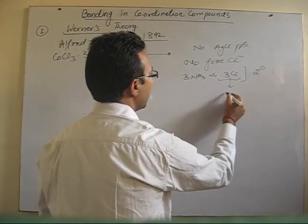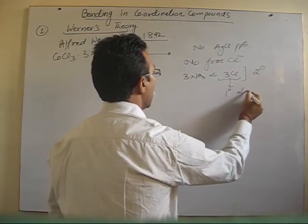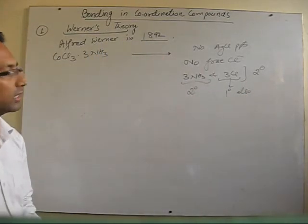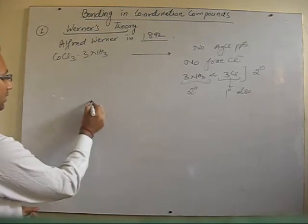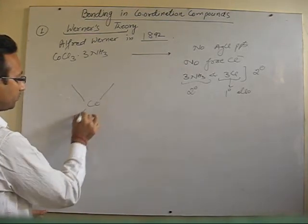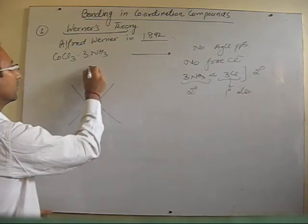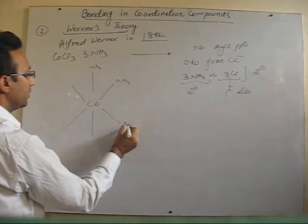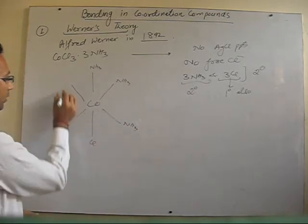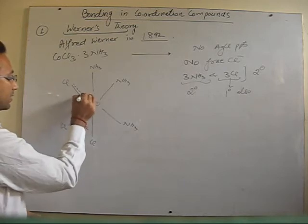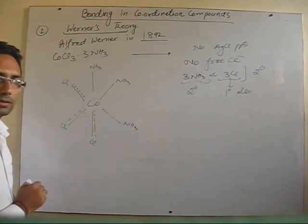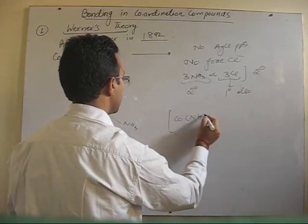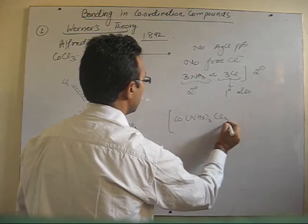These 3 Cl will satisfy primary valency also, but the ammonia satisfies only secondary valency, being neutral — it cannot satisfy the +3 charge of cobalt. We represent this complex like this: cobalt with 3 ammonia and 3 Cl, all written inside the bracket. All 3 Cl satisfy both secondary and primary valency.